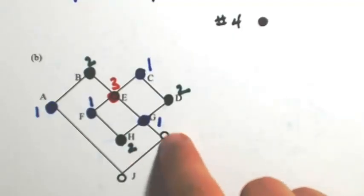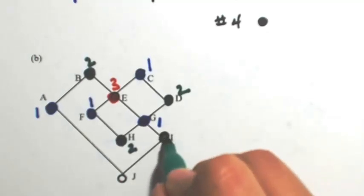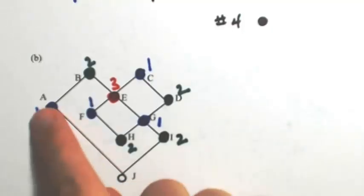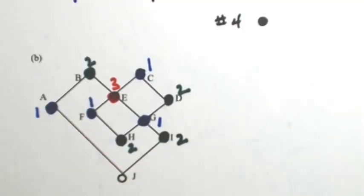I is only connected to the 1, so the next color is 2. And then J is connected to the 1 and 2, so I got to go to color 3.